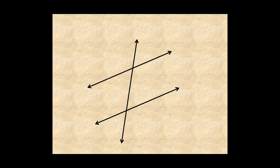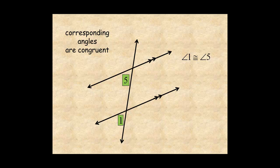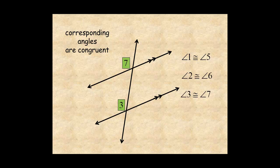If the two lines are parallel, as indicated by these two hash marks on each line, corresponding angles are congruent. So that's angles 1 and 5, 2 and 6, 3 and 7, and 4 and 8 — all congruent angles.